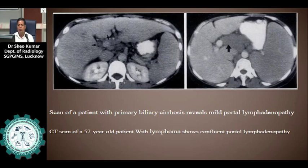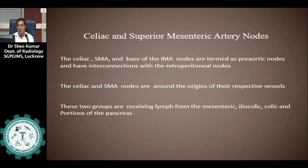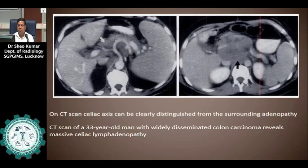Porta hepatis nodes: portal nodes lie within the porta hepatis, extending down to the hepaticoduodenal ligament, and they interconnect with the gastro-hepatic ligament nodes. The portal nodes are abnormal if they are more than 6 mm in size. Adenopathy of the portal nodes commonly causes high extrahepatic biliary obstruction. Many primary neoplasms spread to portal nodes, such as gallbladder, ampullary, liver, stomach, pancreas, colon, and lymphoma. CT scans show multiple small hypodense lymph nodes and confluent portal lymphadenopathy.